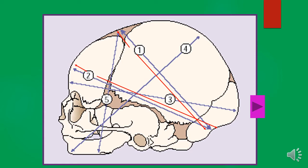The second diameter is called the suboccipital frontal. The suboccipital frontal is about 10 centimeters, measured from below the occipital protuberance to the center of the frontal suture. The second arrow labeled two on the diagram is called the suboccipital frontal.